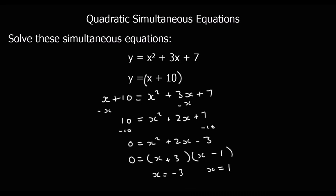There are two x values and we're going to have two y values. So if x is minus 3, then minus 3 plus 10 is 7. And if x is equal to 1, then 1 plus 10 is 11.